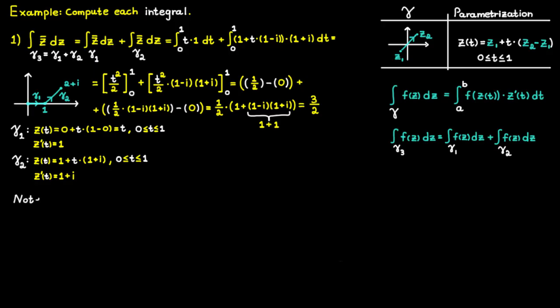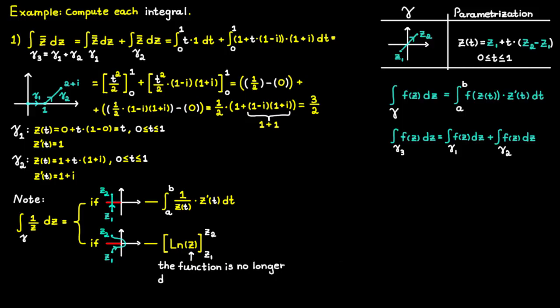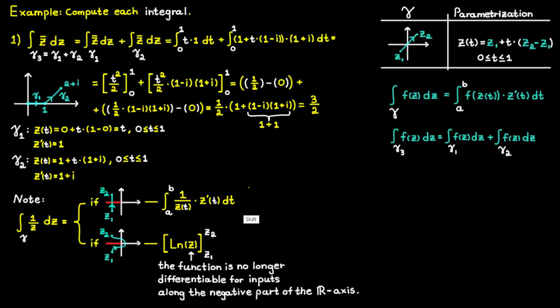The last thing to discuss is integrating the function 1 divided by c. You have two options, and you must look at the path to determine which applies. If the path crosses the negative part of the real axis or the point 0, you have to compute it the standard way. But if your path can avoid this region, then you are able to use the antiderivative right away. This comes from the fact that the principal logarithm is no longer differentiable for inputs along the negative part of the real axis.